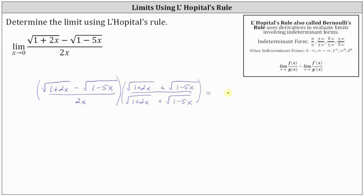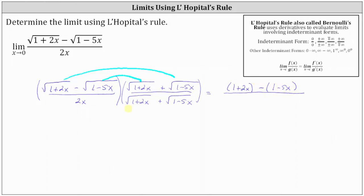Now we'll multiply the numerators. First, the square root of the quantity one plus two x times itself gives one factor of one plus two x. The middle cross products are opposites and simplify to zero. The last product is negative square root of the quantity one minus five x times positive square root of the quantity one minus five x, which gives us minus one factor of one minus five x. The denominator remains as two x times the quantity square root of one plus two x plus square root of one minus five x.